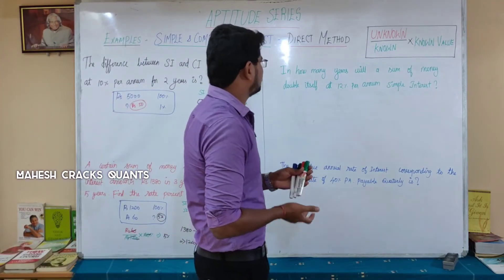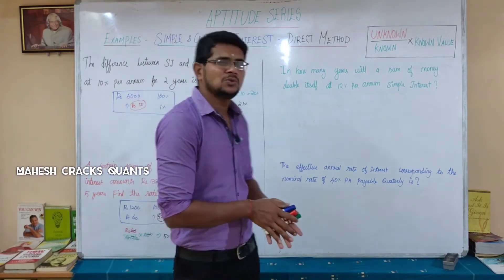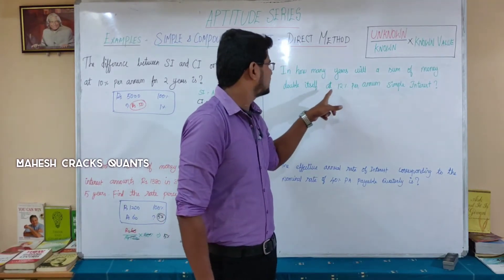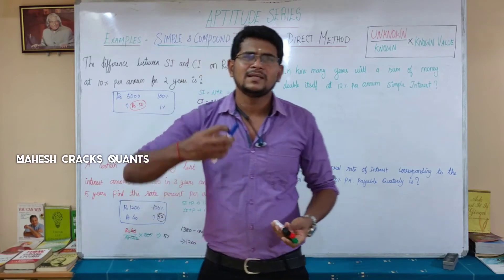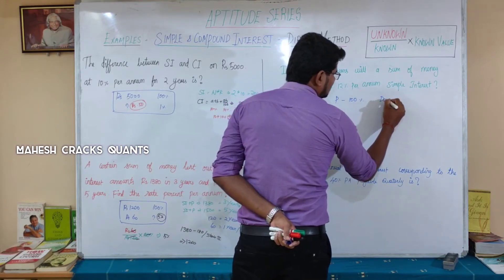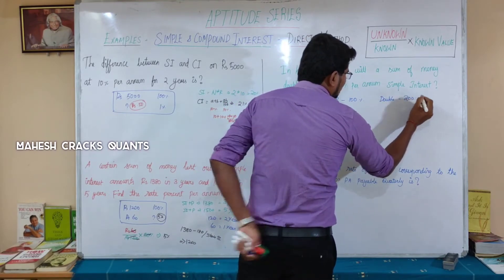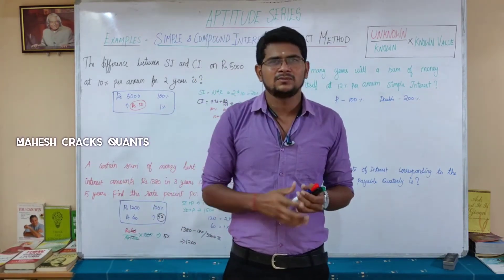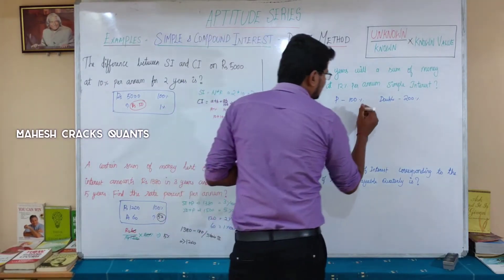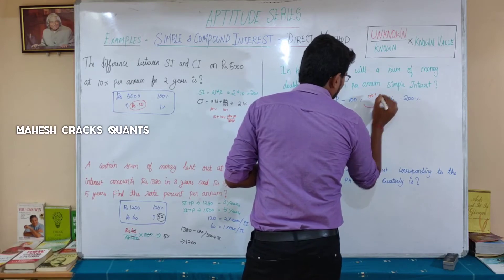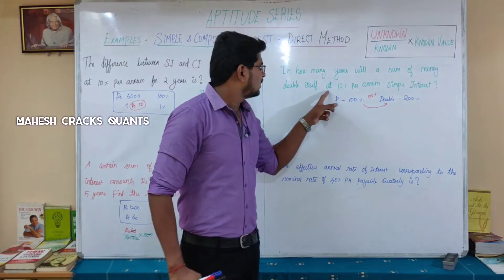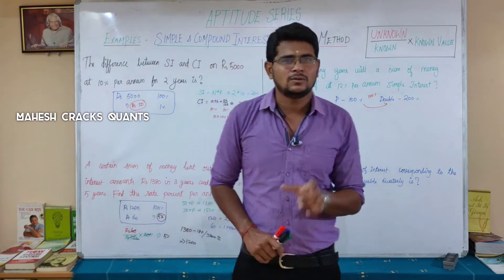Next question: in how many years will a sum of money double itself at 12% Simple Interest? The principal is 100%, and to double it we need 200%, so the required increase is 100%. Simple Interest is a direct increase.